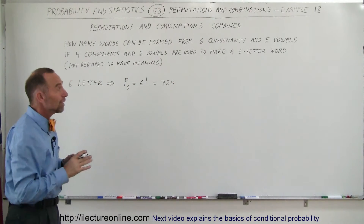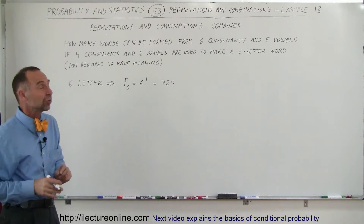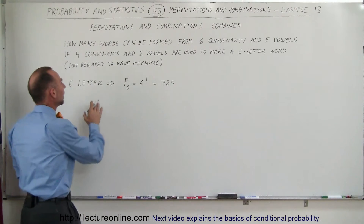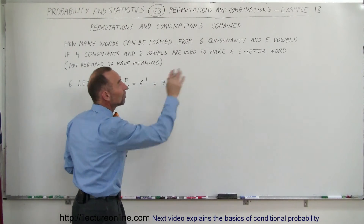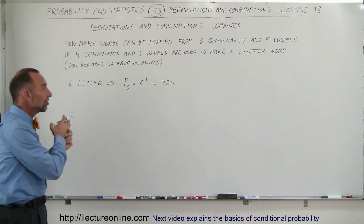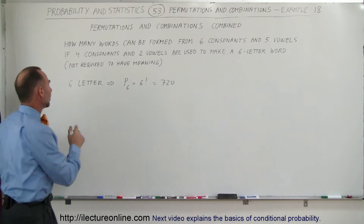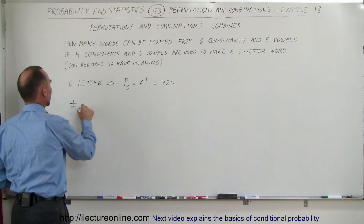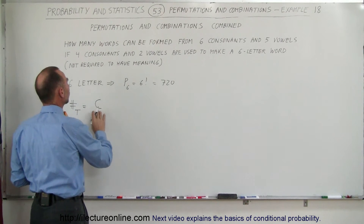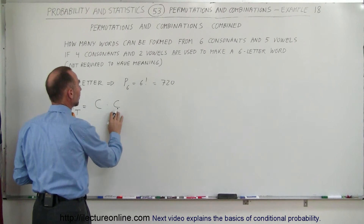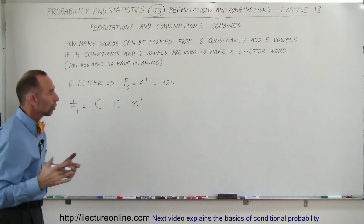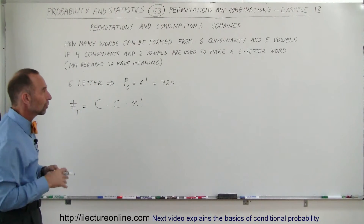Notice that we're not limited to just six letters — we have six consonants and five vowels to choose from, and we can use four consonants and two vowels. So we have to multiply the number of permutations we can have with a six-letter word times the number of combinations we can come up with for vowels and for consonants. Therefore, the total number of permutations would be the combinations for vowels times the combinations for consonants times n factorial, where order does matter.